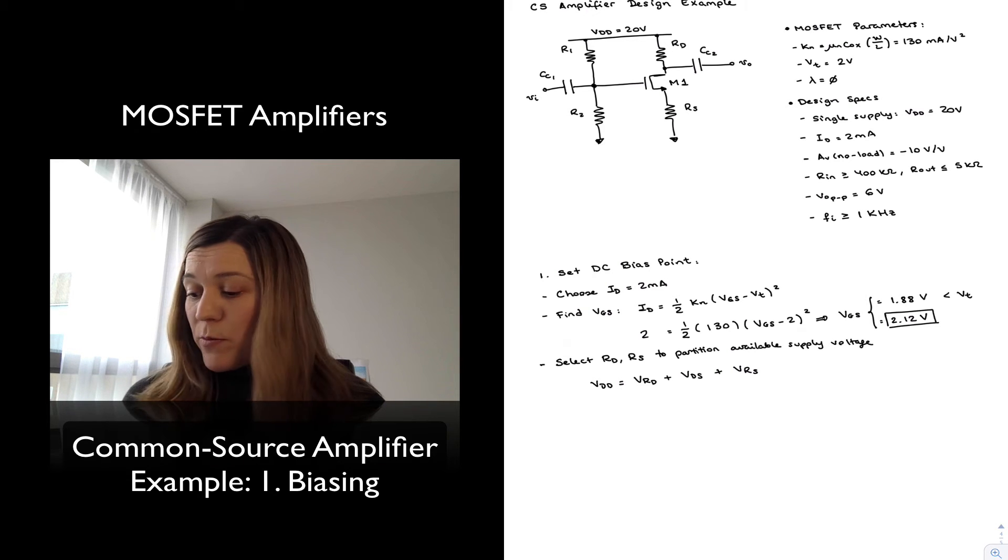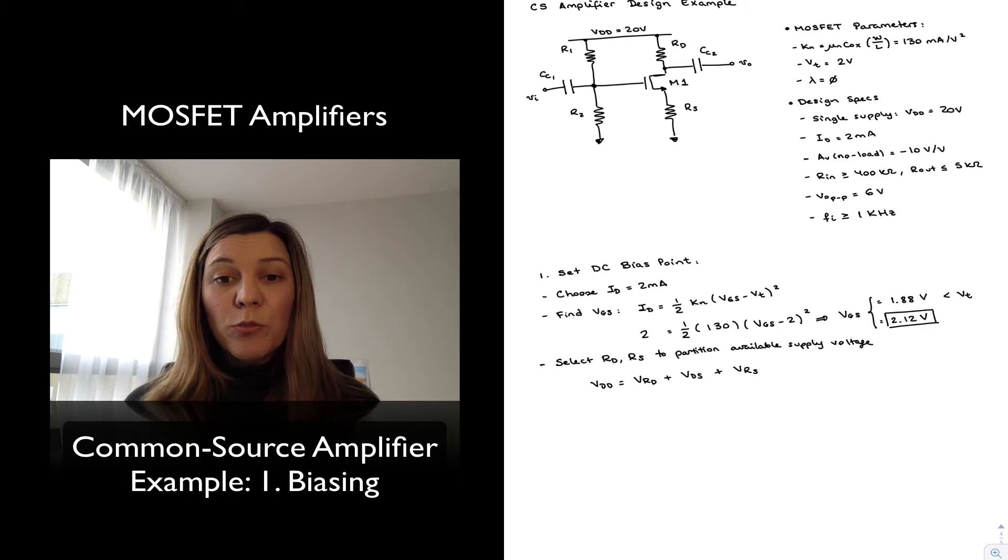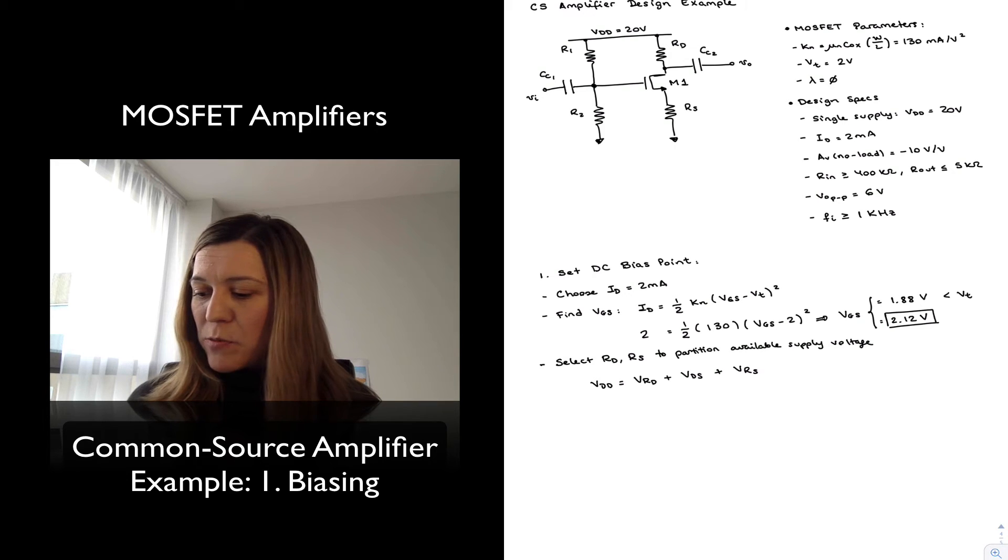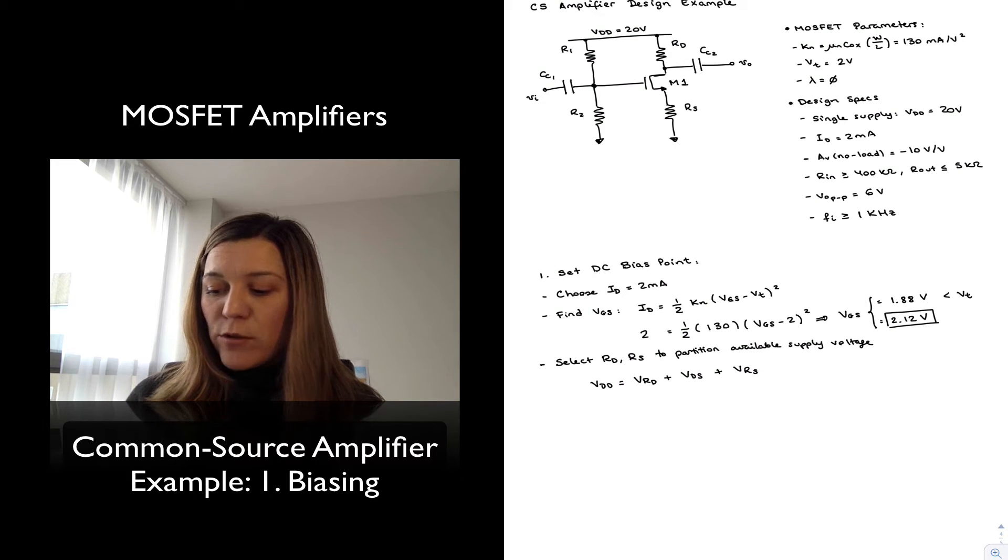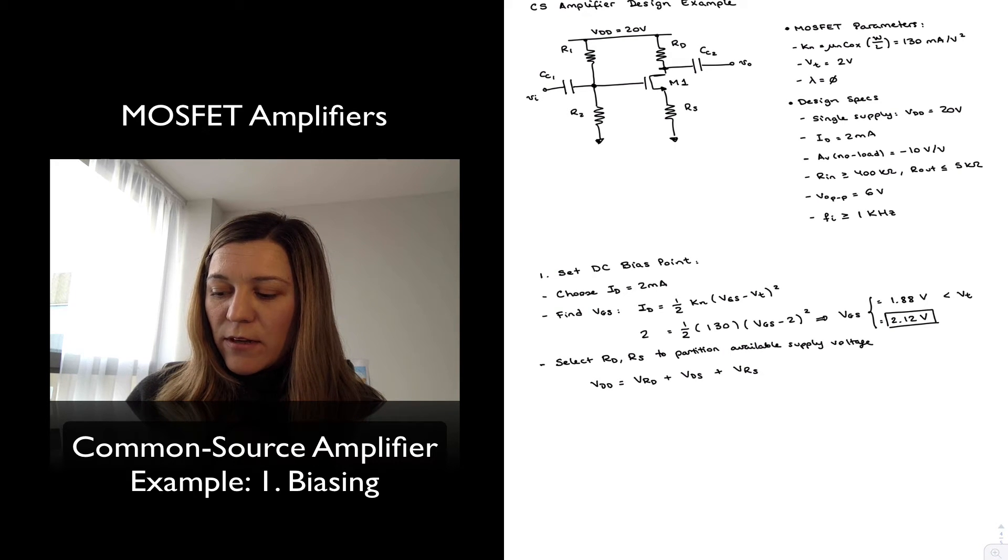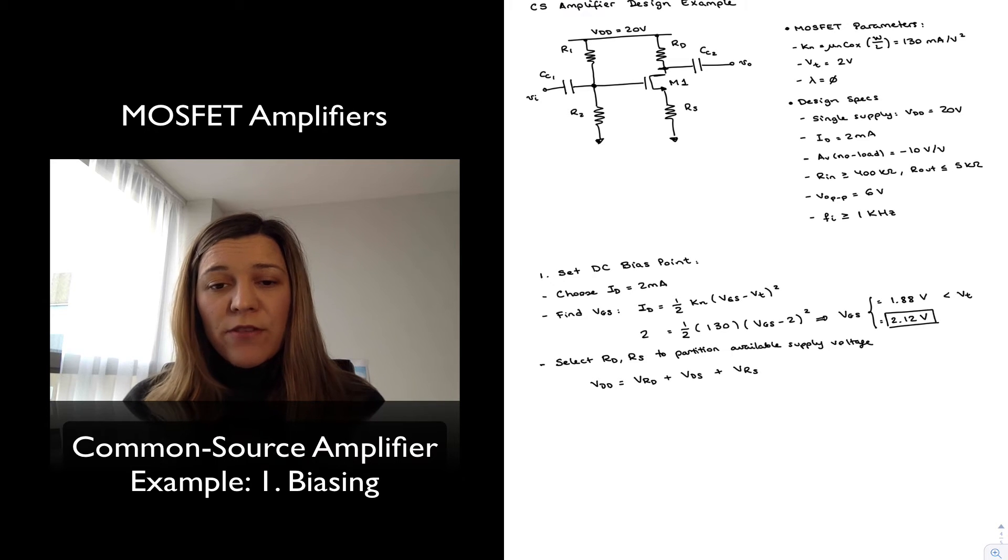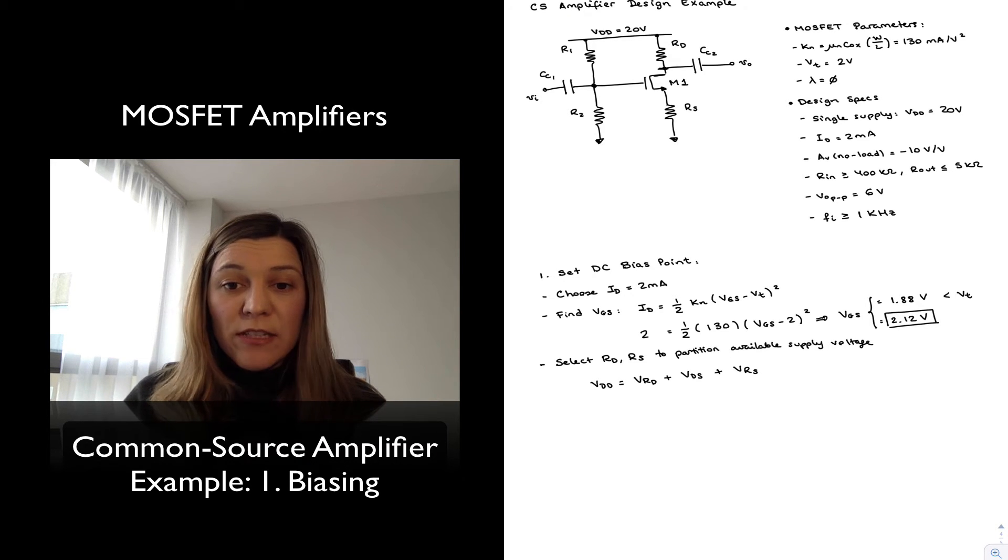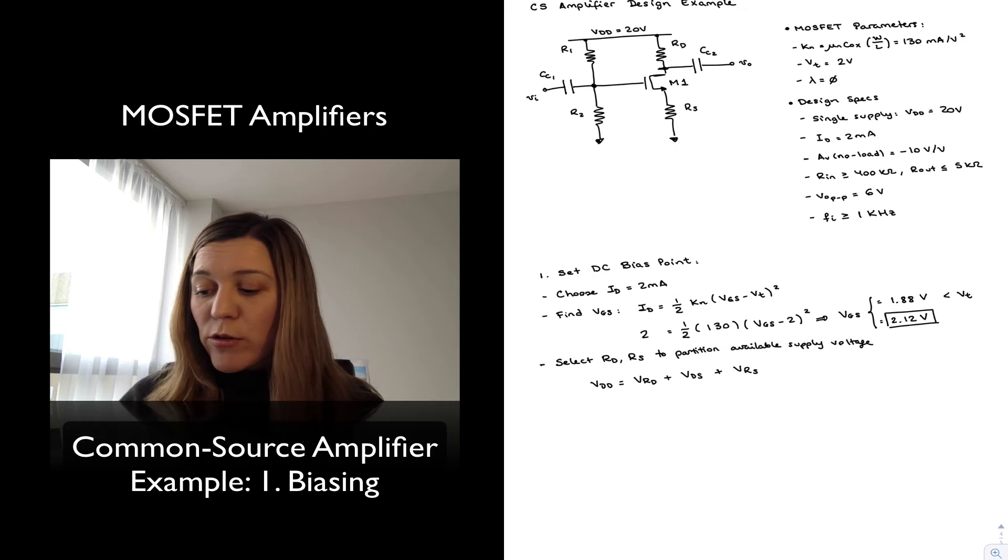But I do need to keep in mind that I have a specification for a peak-to-peak output voltage of 6 volts, so that means my drain voltage needs to be at least 3 volts below my supply voltage VDD. Typically a little bit better than that; we don't want to just drive it all the way to the edge.